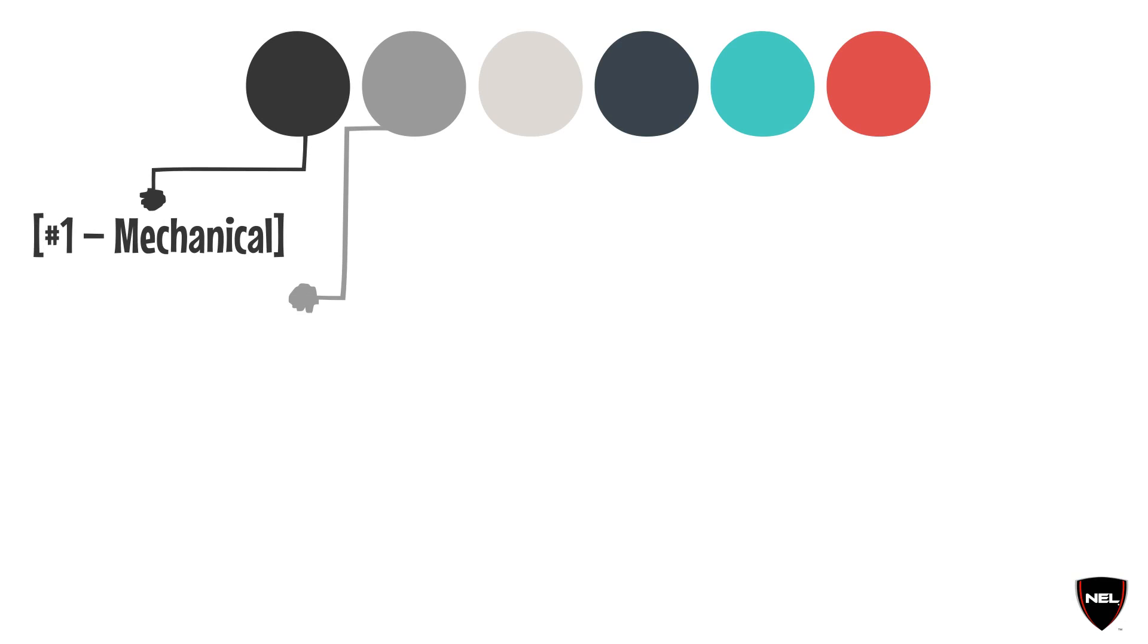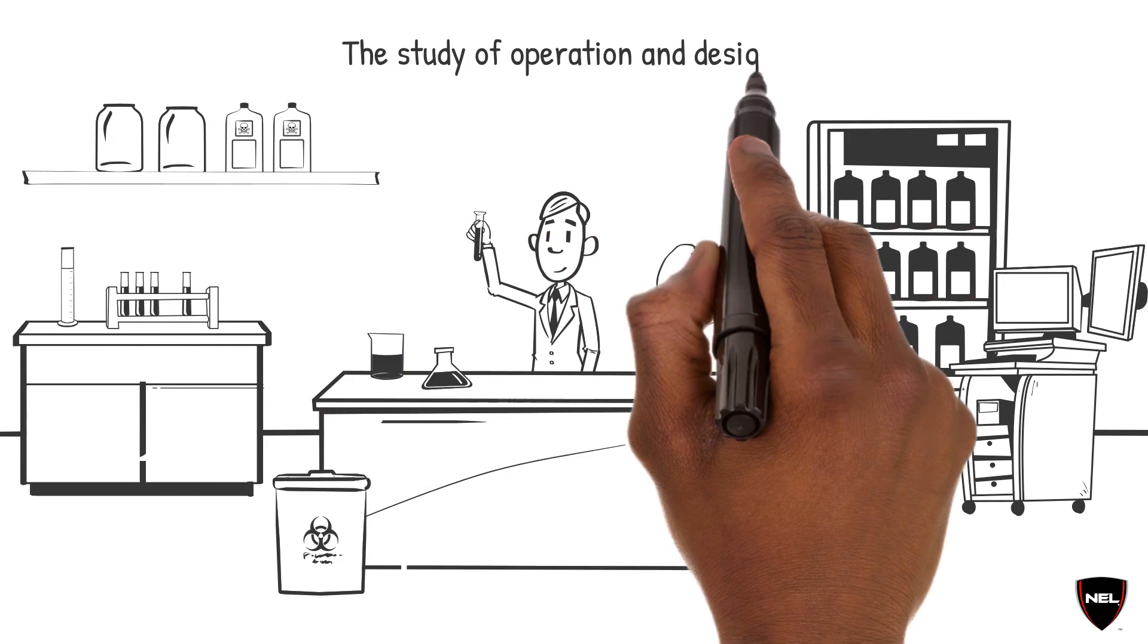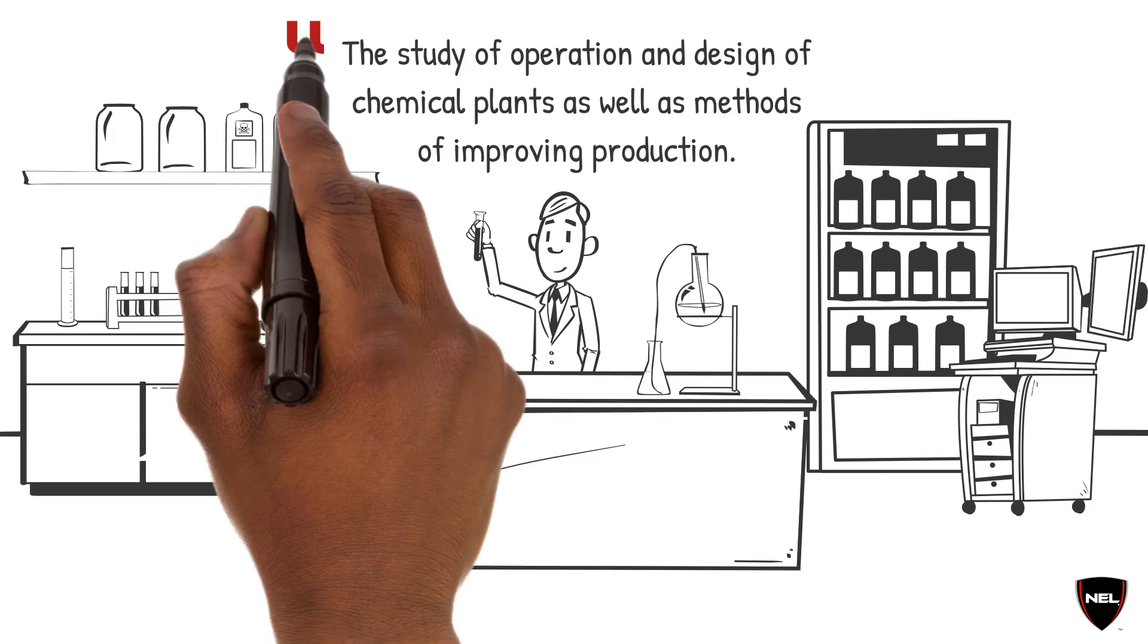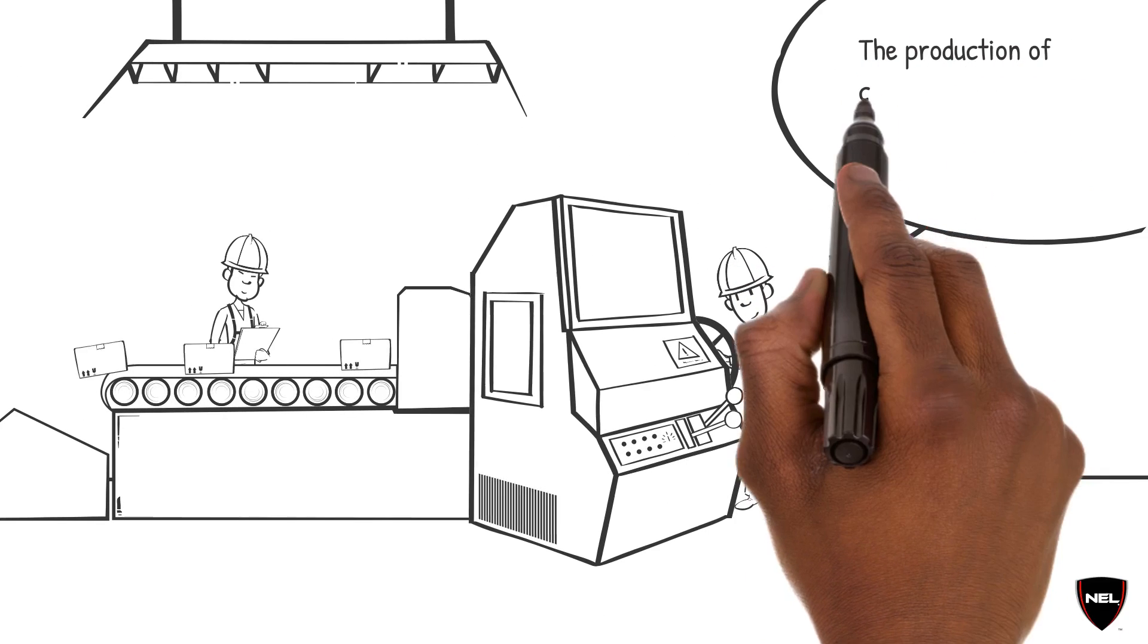Number 2, Chemical. Chemical engineering is a certain type of engineering which deals with the study of operation and design of chemical plants as well as methods of improving production.